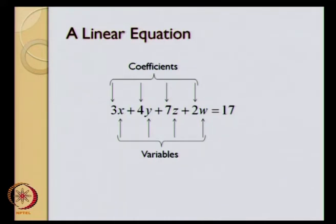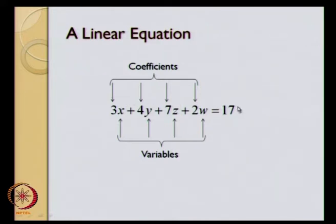What happens is when we write down an equation of this sort, out of four variables, one degree of freedom is lost. Why? Because all these four variables have to satisfy one particular condition. So, when one of the degrees of freedom is lost by writing down an equation of this sort, it will represent a three-dimensional hyper surface in a four-dimensional space.